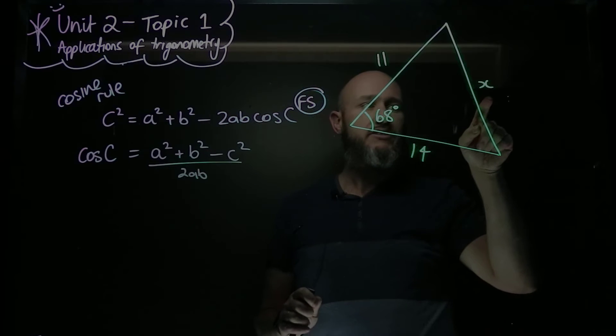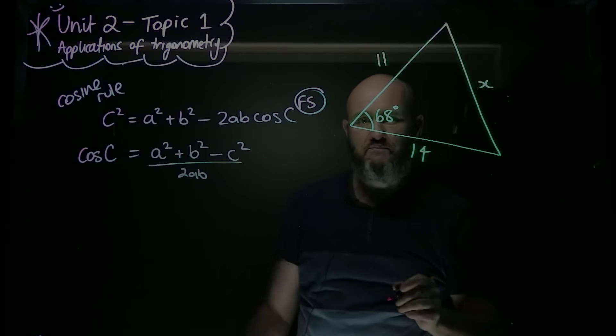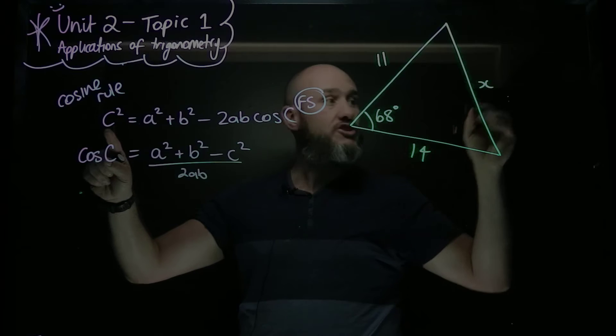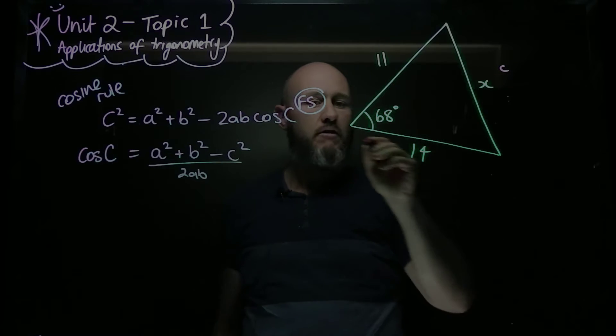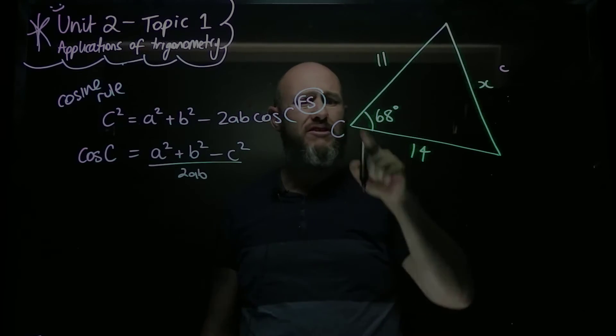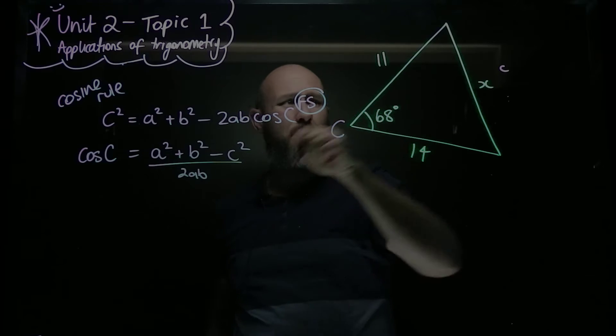Here I want to find x, and x is a side. So I want to call x c, because that's where I'm heading. This is therefore capital C, which is great because that's what we're dealing with. So it has to be the included angle between a and b. And in any order, this is my a and b.